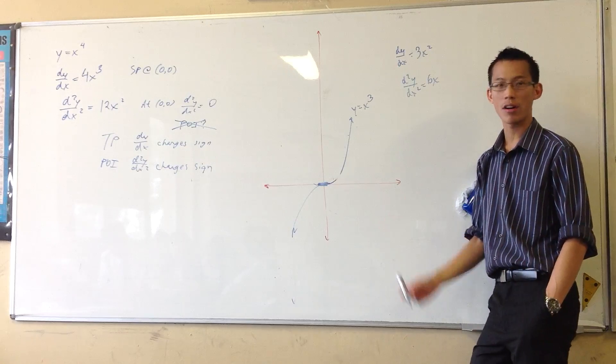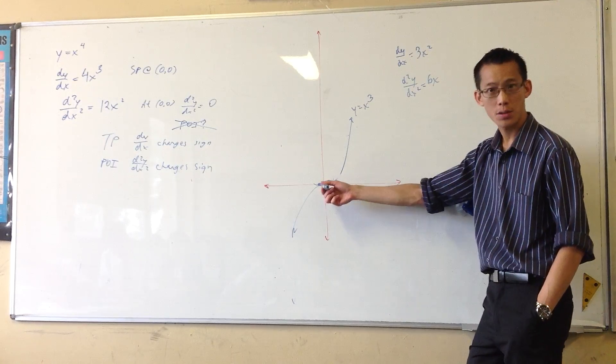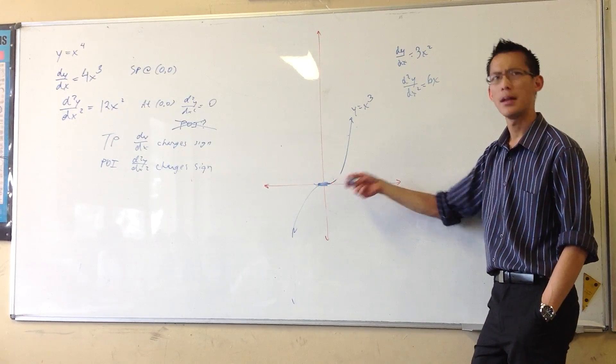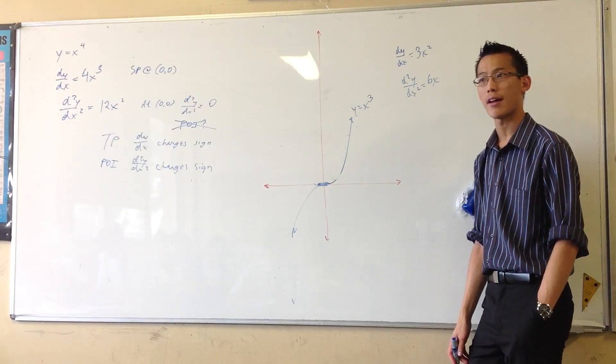Okay, so again, at the origin, you've got first derivative of zero, second derivative of zero. But it's quite different to the example we just looked at, right?